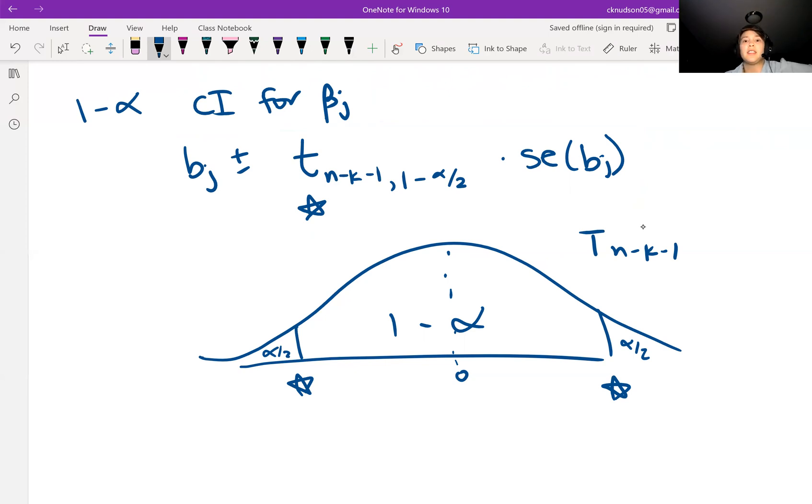Another way of saying this is if we did this whole process over and over, then about 95% of 95% confidence intervals would contain the true value for beta J.